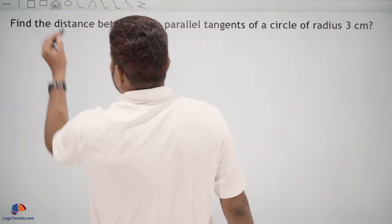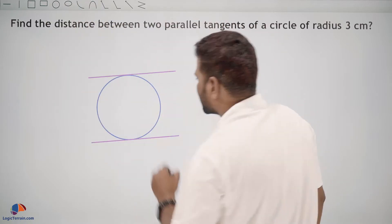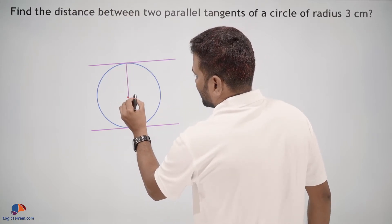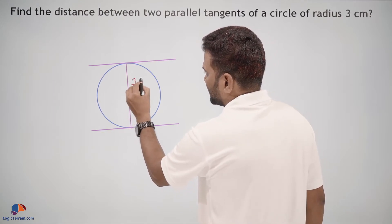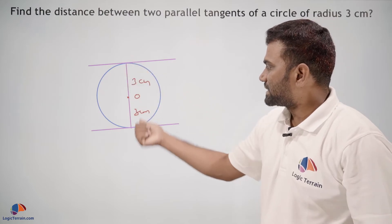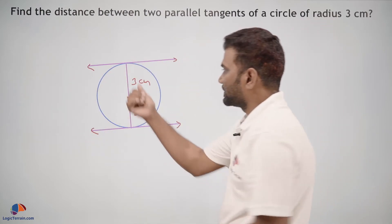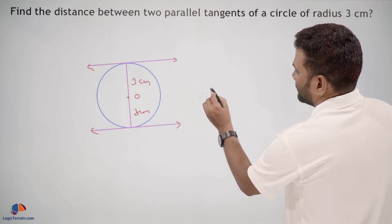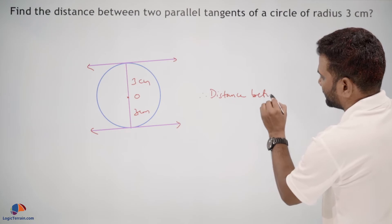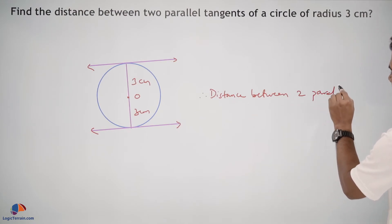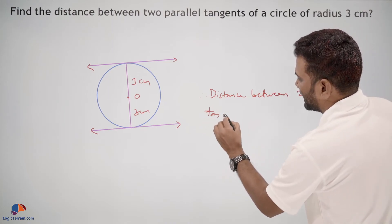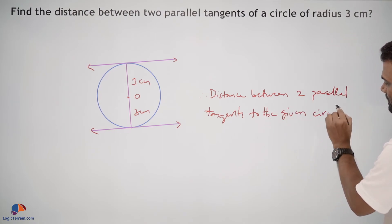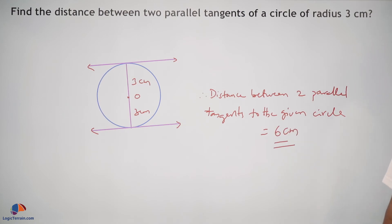Let us visualize that. Take a circle with two tangents — this is the distance between them. The center of the circle is O and the radius is three centimeters. This side is also three centimeters. Therefore, the distance between two parallel tangents is equal to three plus three, which is six centimeters.